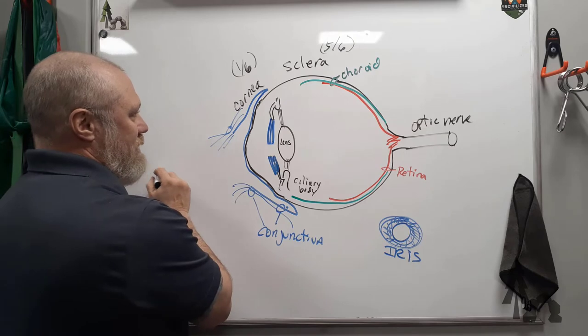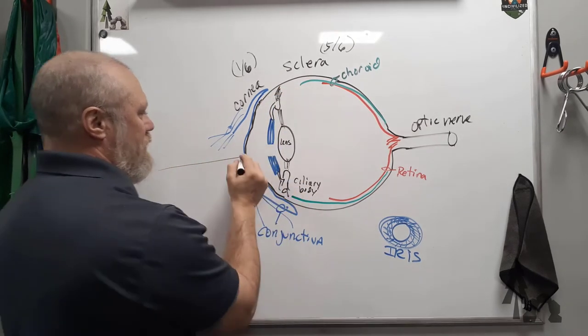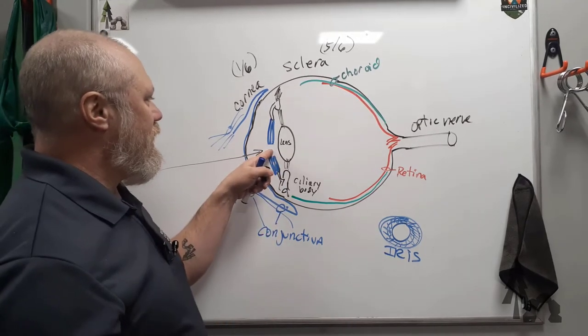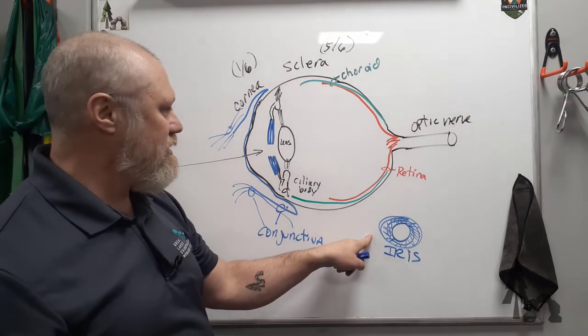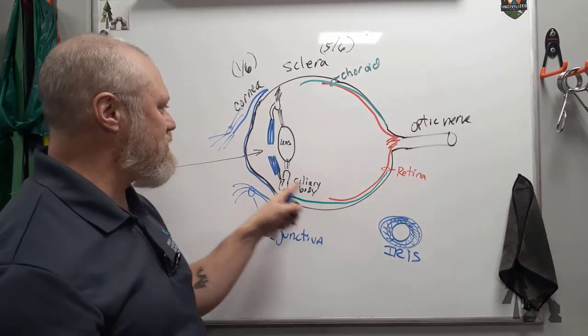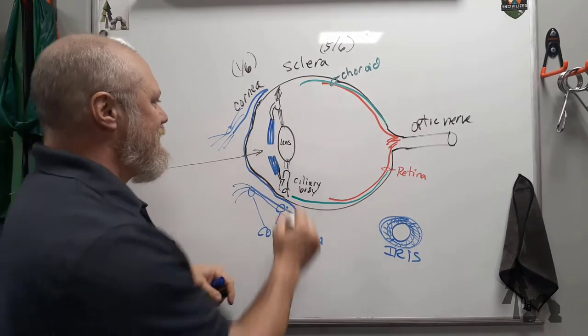Light rays come in through the pupil, and it is constricted or dilated by the iris, those muscles of the iris. Like the shutter on a camera, to allow more or less light in.